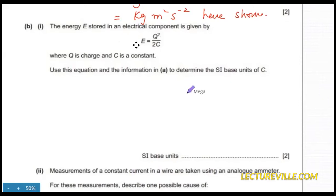Always make the variable under investigation the subject of formula. So it will become C equals Q squared divided by 2E. And remember these constants do not participate in making of units. Remember this is charge and the unit for charge is coulomb.